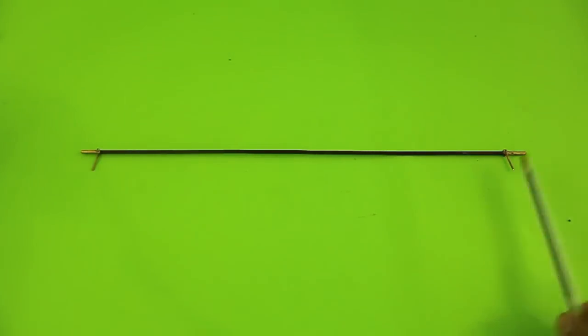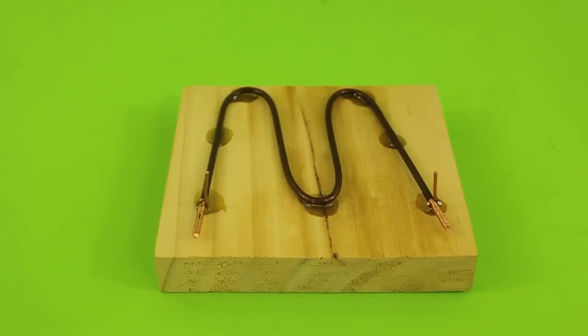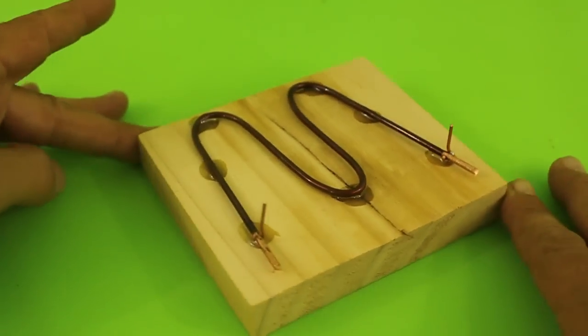These wires are the points where we will measure the voltage and the distance between the two wires is a foot exactly. In order to make it more compact I bend the wire and put it on a wood base.